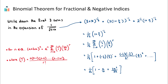In this video, we are going to go through an example of the binomial theorem for fractional and negative indices. We might be used to binomial theorem questions where we have a positive integer as our power, but this is an extension on from that, which is only for Analysis and Approaches HL students, where we might need to raise our binomial to a power that is not just a positive integer.